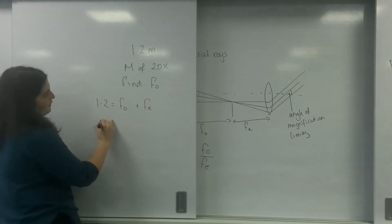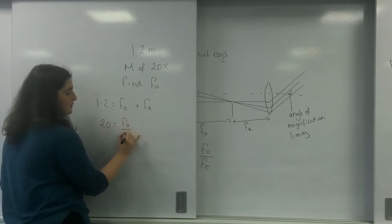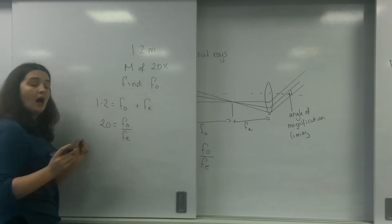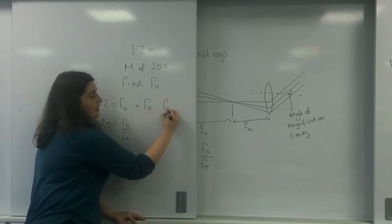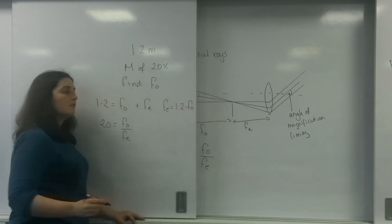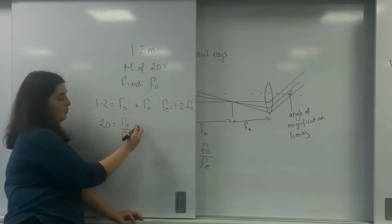I also know that 20 is F0 divided by FE. I have two equations and two unknowns, which means I can solve it. So I want to find F0. So if I rearrange this for FE equals 1.2 minus F0, I can put it into this formula here.